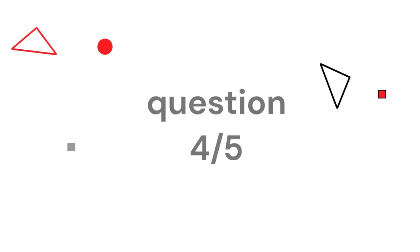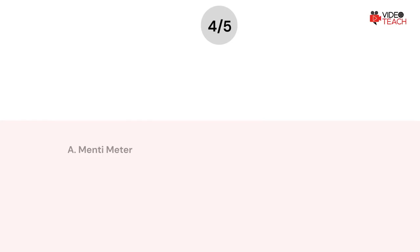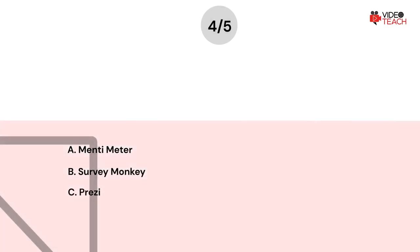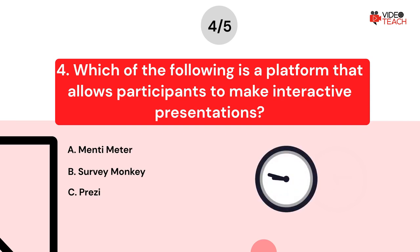Question number four. Which of the following is a platform that allows participants to make interactive presentations? Option A: Mentimeter. Option B: Survey Monkey. Option C: Prezi. Now you have about 15 seconds to think about your answer.